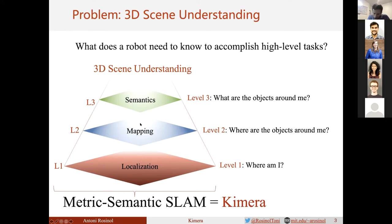Finally, it's not sufficient to just know the geometry. We must also know the semantic meaning of this geometry to determine where to go next. To achieve this level of 3D scene understanding, we provide our robot with a metric semantic simultaneous localization and mapping algorithm, also known as metric semantic SLAM. Therefore, we developed Kimera.